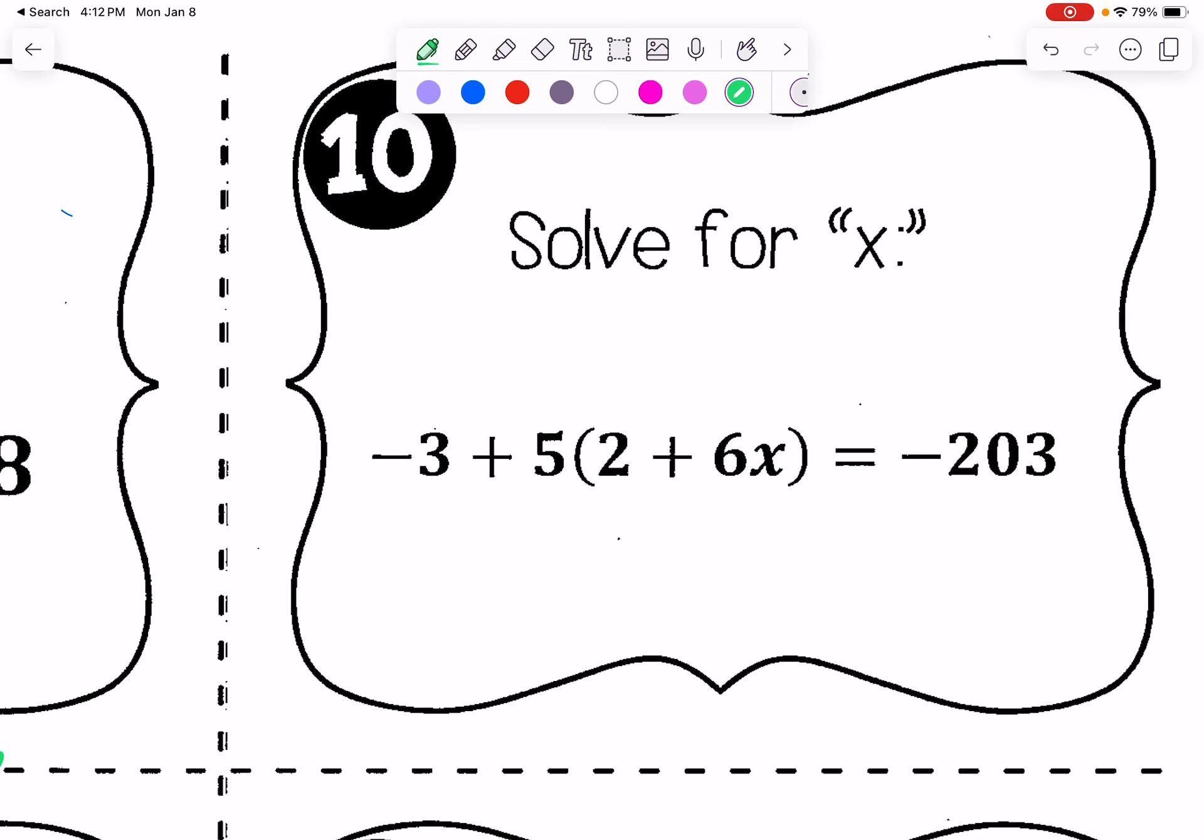For this one, we have a few steps going on. Remember, first step is to look to see if we can use the distributive property anywhere. We can right here. So we have negative 3 plus 5 times 2 is 10, plus 30x. That's 5 times 6x equals negative 203. And we'll look to see any like terms we can combine. Well, we can combine negative 3 plus 10. That becomes 7. 7 plus 30x equals negative 203.